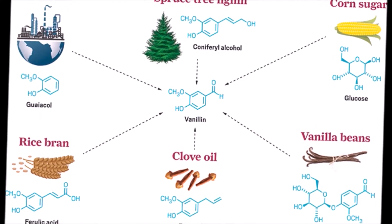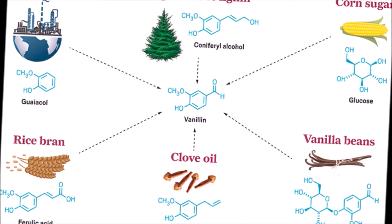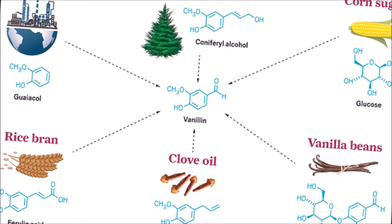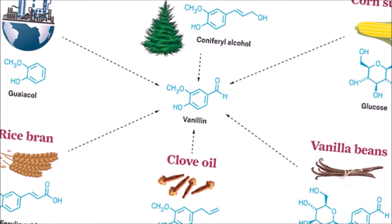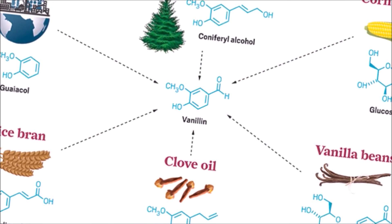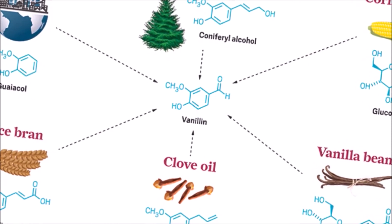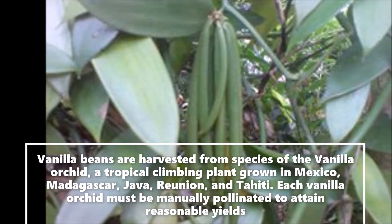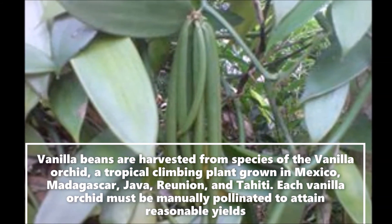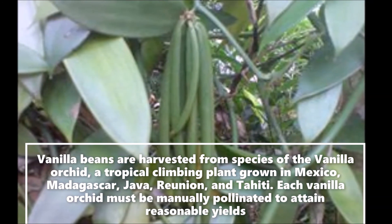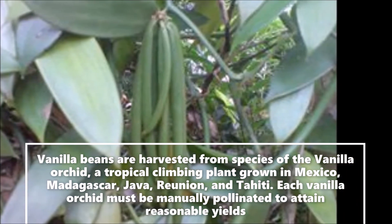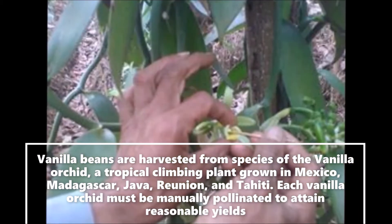Vanilla beans are harvested from species of the vanilla orchid, a tropical climbing plant grown in Mexico, Madagascar, Java, Sumatra Indonesia, East Nusa Tenggara, Bali, Uganda, Reunion, and Tahiti. Each vanilla orchid must be manually pollinated to attain reasonable yields.